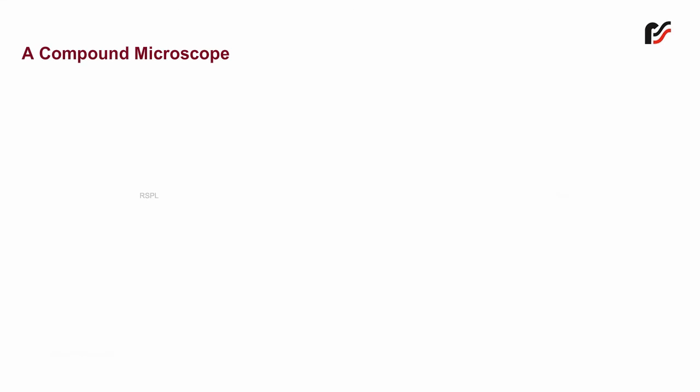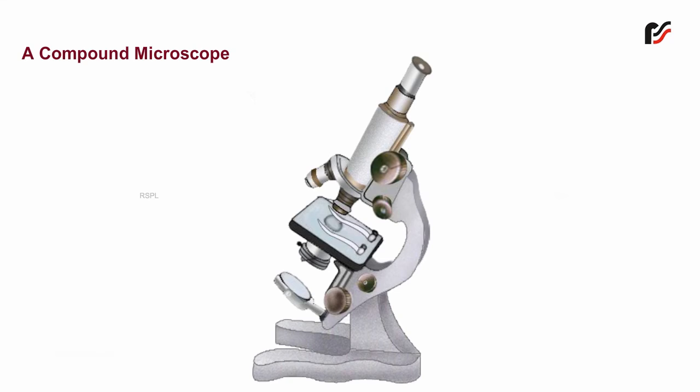A compound microscope is an instrument used for enlarging and magnifying small objects. A compound microscope consists of two systems of lenses called the objective lens and ocular lens, i.e., eyepiece, to obtain higher magnification. The various parts of the compound microscope shown on your screen are as follows.